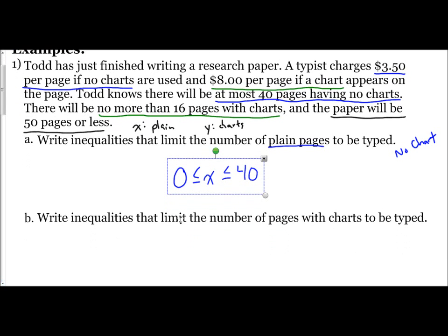And so let's look at the second one. Write inequalities that limits the number of pages with charts. And so the ones with charts, I underline all that information in green. So $8 per page, that's not limiting the number of pages. Come down here, no more than 16 pages with charts. So that's the important information. So Y is the variable I'll use for charts. And so my Y value, no more than 16, so it has to be less than or equal to 16. But we also have the other idea. Less than 16 goes down 15, 14, 3, 2, 1, 0, and goes all the way into the negatives. And you can't have a negative number of pages. So we have to put our left boundary of 0. So our number of plain pages is between 0 and 40, and our number of pages with charts is between 0 and 16.